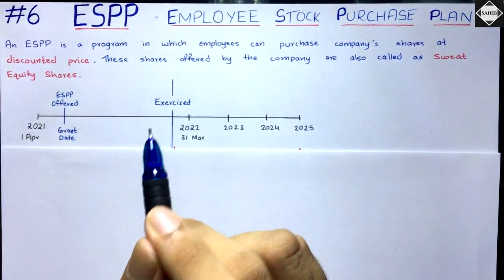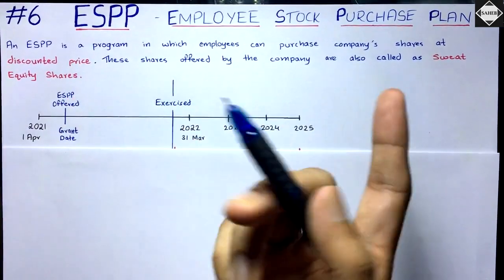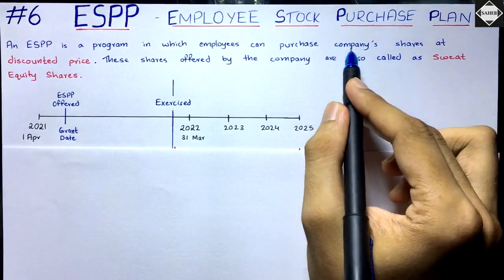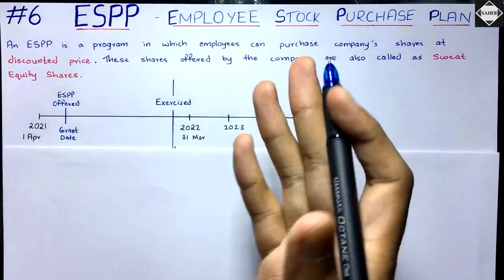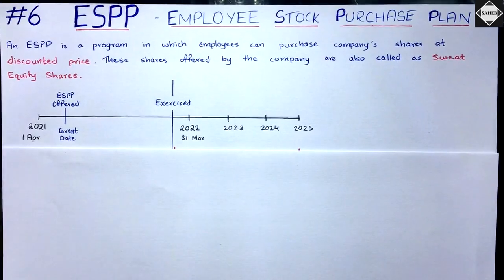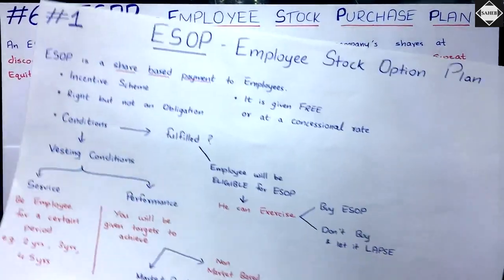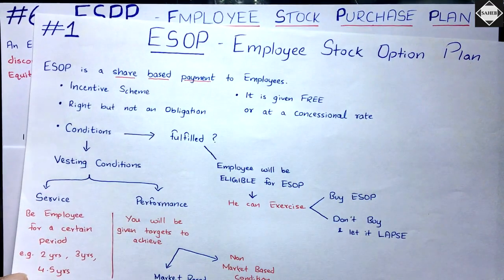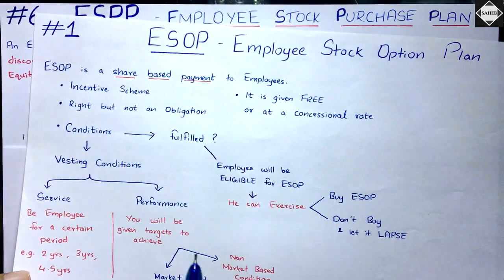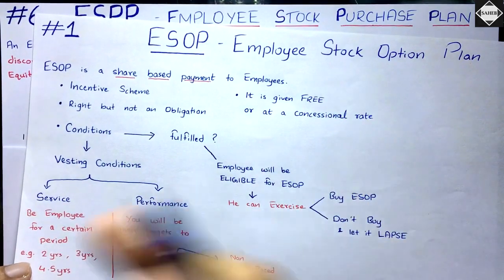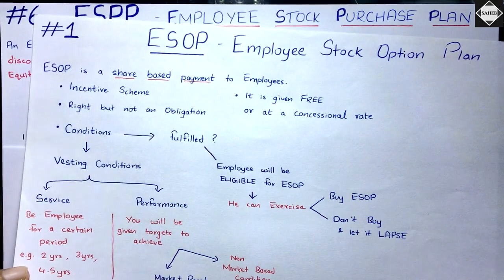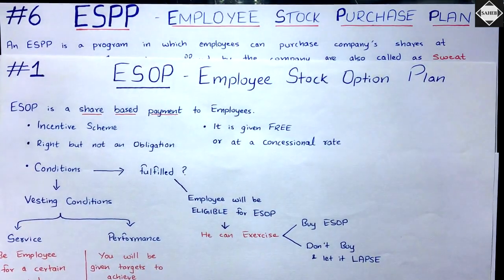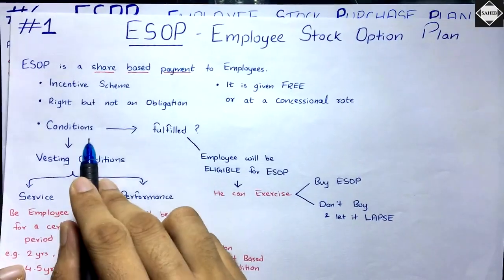You might wonder: the same thing happens in ESOP too — employees can purchase company shares at discounted prices. So how is ESPP different? ESPP and ESOP are almost similar. ESOP is a share-based payment made to employees as an incentive scheme. Employees have the right but not the obligation to exercise their options. These things are the same in ESPP as well — share-based payment, incentive scheme, not an obligation.